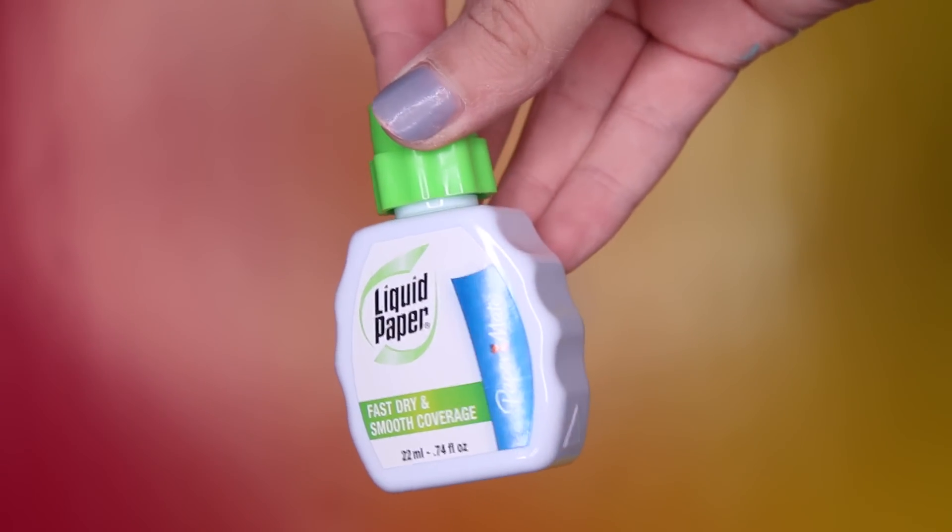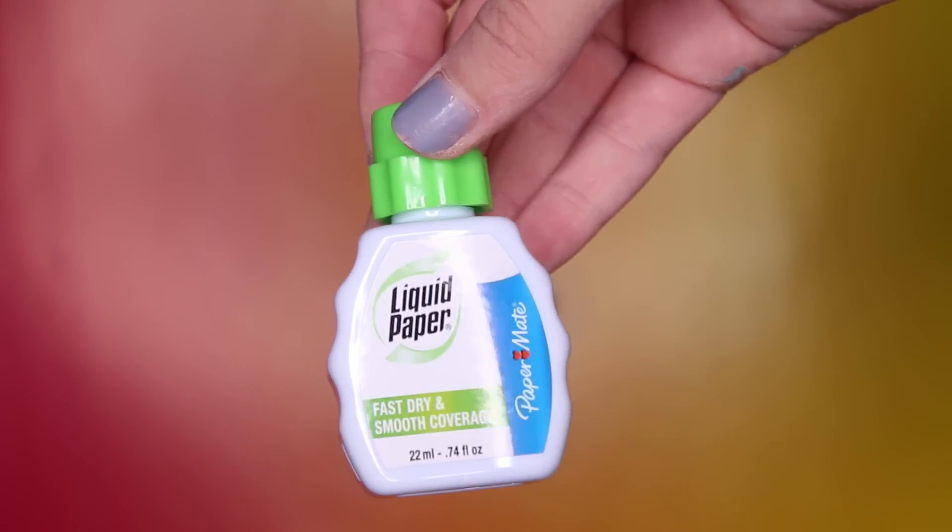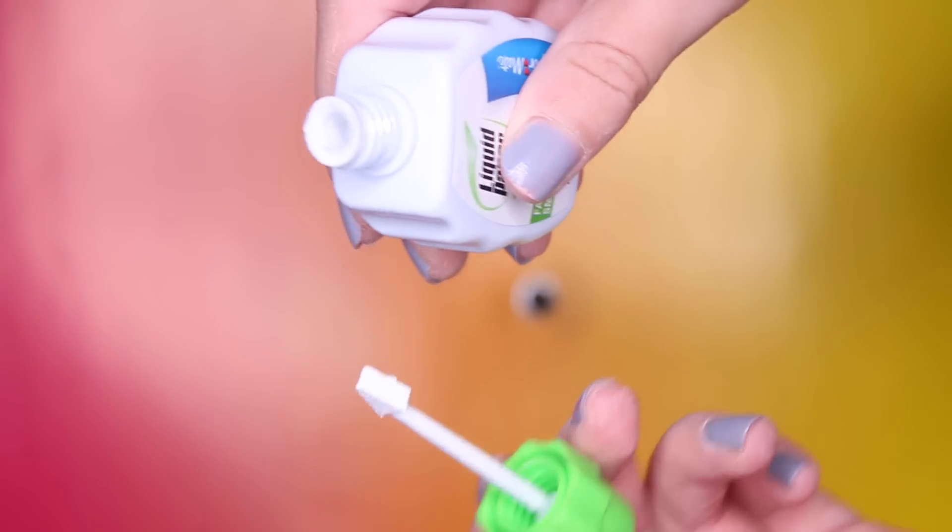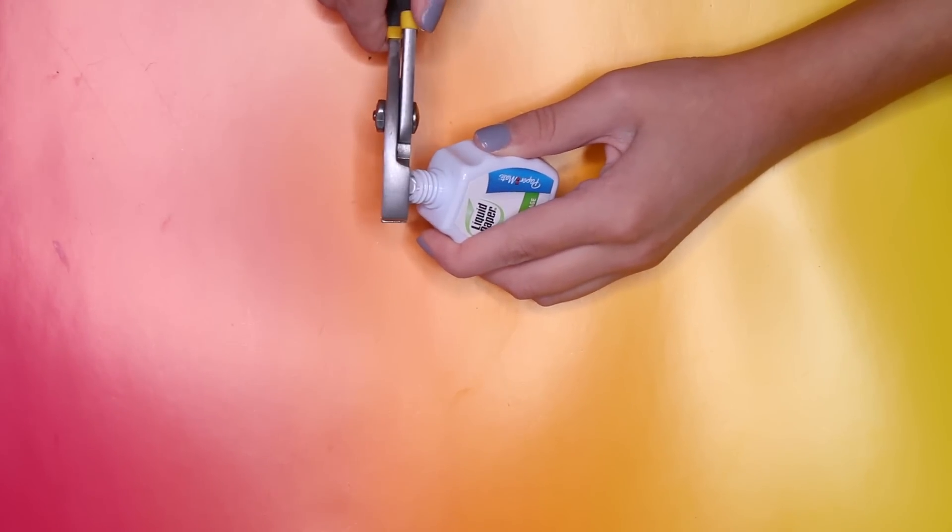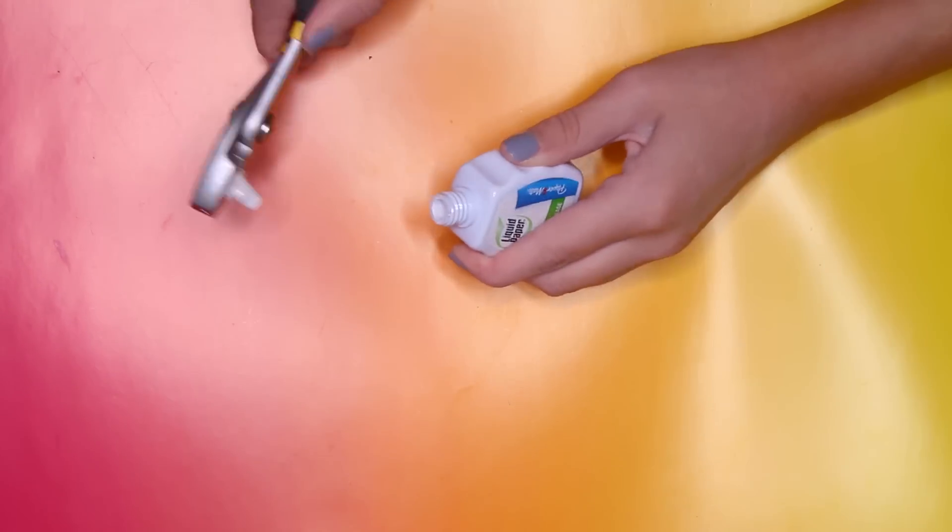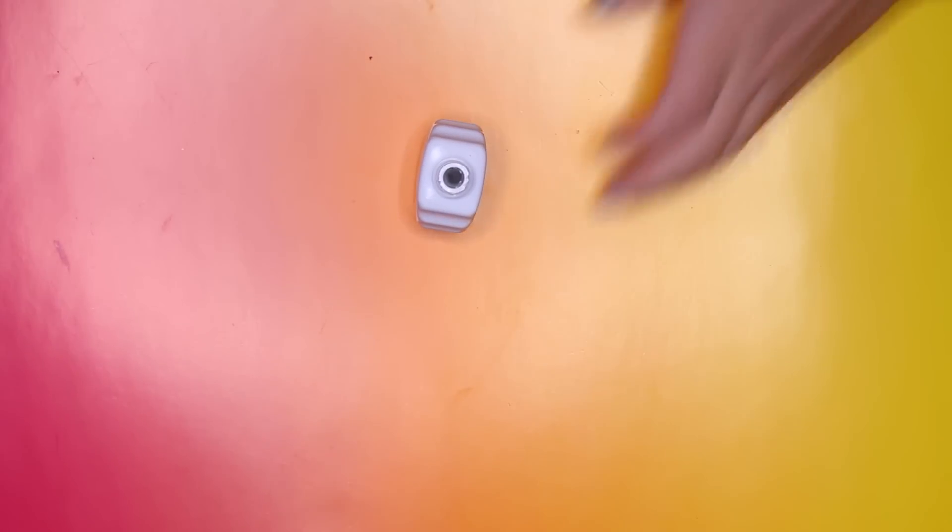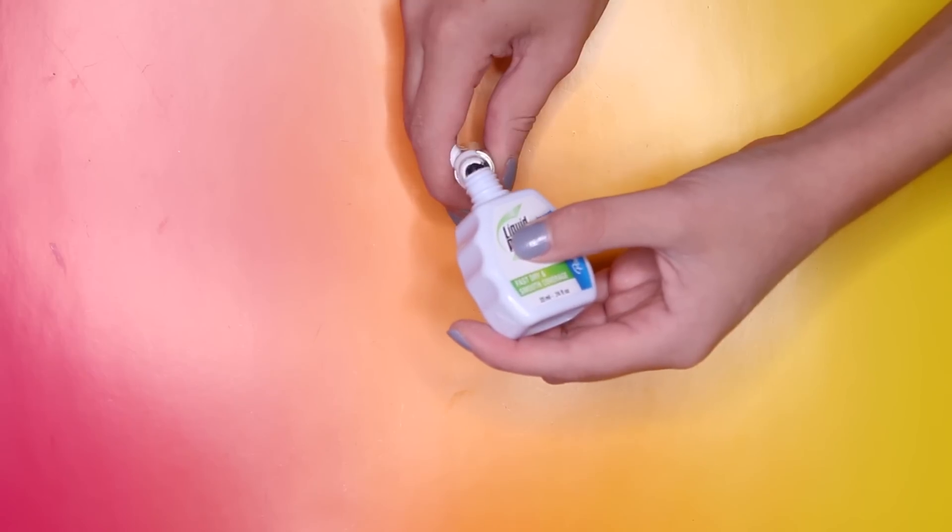And now it is time for the white out to come into play. So before you do anything with the white out, you're going to want to take off the rubber lining on the white out because this makes it a lot easier to pour the white out. And then it's as simple as that. Just pour the white out into the concealer.